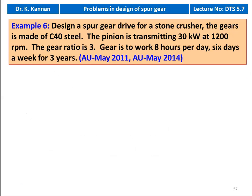Then we take another example: example number 6, which appeared in May 2011 and May 2014. Design a spur gear drive for a stone crusher. The gears are made of C40 steel. The pinion is transmitting 30 kilowatt at 1200 RPM. The gear ratio is 3. The gear is to work 8 hours per day, 6 days a week for 3 years.